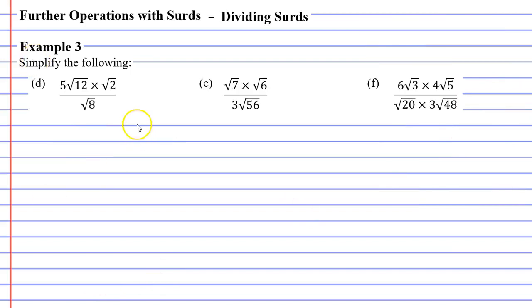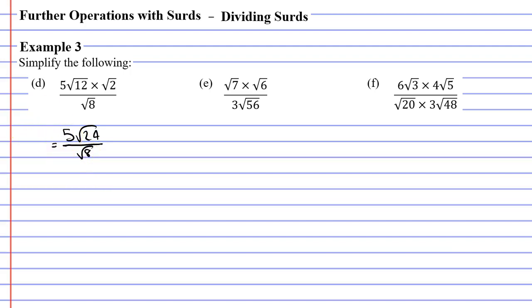Moving on to question D, which involves multiplication. I multiply first: 12 times 2 gives 5 root 24 at the top, with root 8 at the bottom. Using the dividing method, 24 divided by 8 is 3, so we write down the whole number 5 and then root 3. The dividing method was nice and quick here.